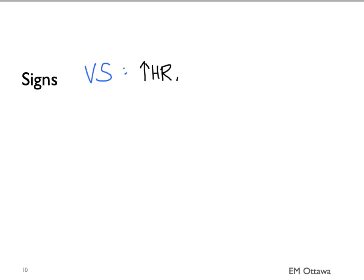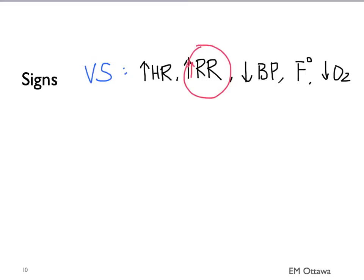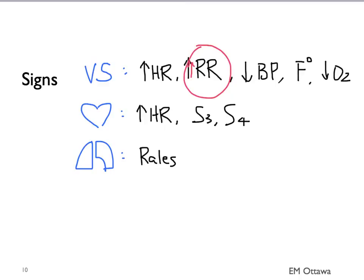On physical examination, the changes you might see include tachycardia, tachypnea, hypotension, fever, and low oxygen saturation. Of these, tachypnea is most often seen. On the cardiac exam, you should again see tachycardia, and you might appreciate an extra heart sound such as S3 or S4. You might hear crackles on the respiratory exam. You might also see signs compatible with DVT in the lower limb, such as swelling, redness, and warmth.